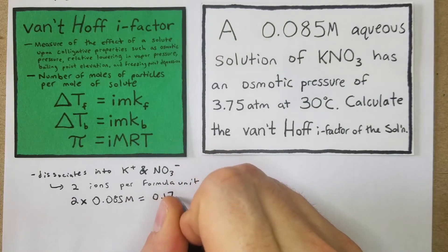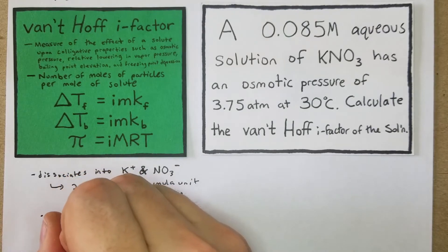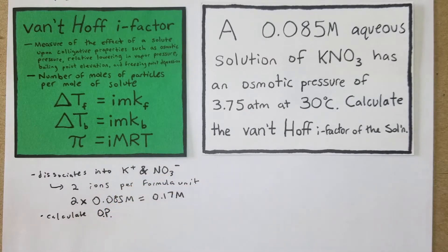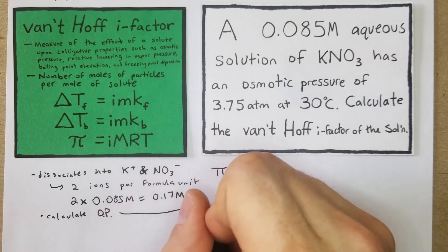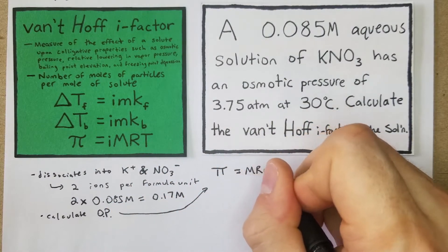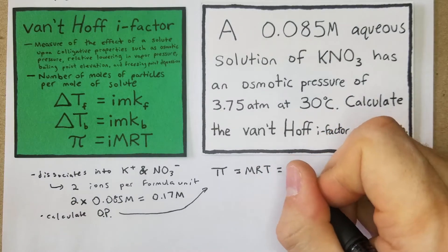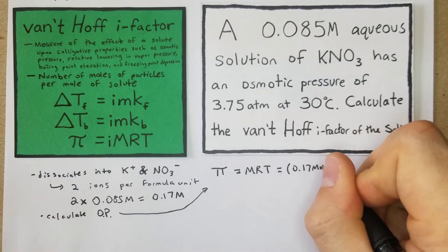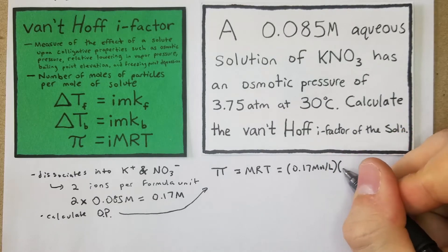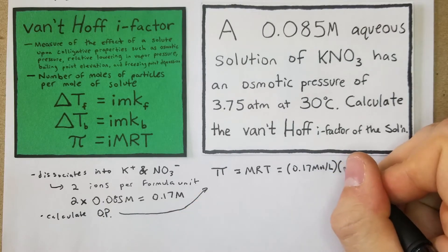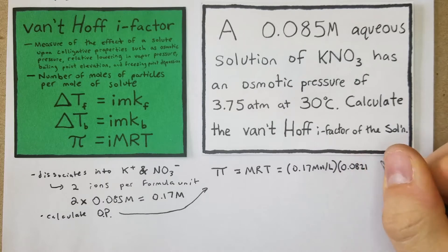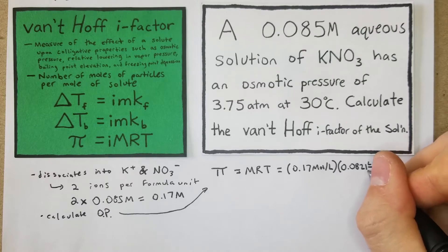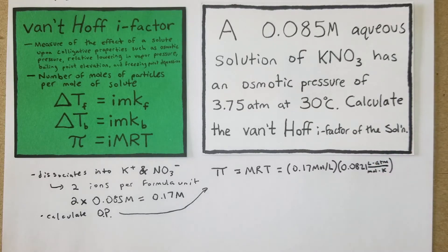Now we're going to calculate our osmotic pressure using this formula here. We're just going to sub in for what we know. We have the M we just found, 0.17 molar, times our R value 0.0821 because that is the one that has atm in it and we want our pressure units to be consistent, times our temperature, which we convert by adding 273, so that's going to be 303 Kelvin.